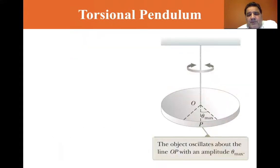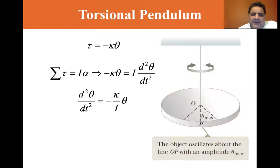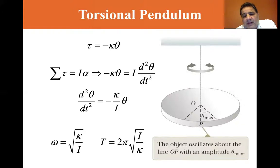And for a torsional pendulum, we'll go through this quickly. Kappa is the torsional equivalent of the spring constant k, and omega equals the square root of kappa over I, where I is the moment of inertia, and the period here T equals 2π square root of I over kappa.